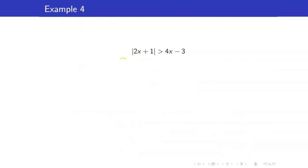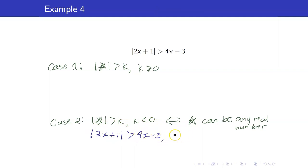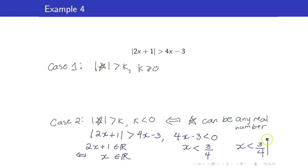For the next example, I again separate into two cases: k greater than or equal to 0, and k less than 0. For Case 2 (k < 0): we have |2x + 1| > 4x − 3, with the assumption that 4x − 3 is less than 0, meaning x is less than 3/4. If x is less than 3/4, then 2x + 1 can be any real number. Taking the intersection of all real numbers and x less than 3/4 gives x is less than 3/4.